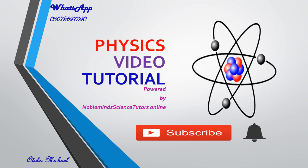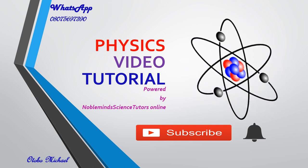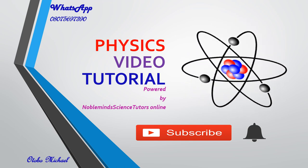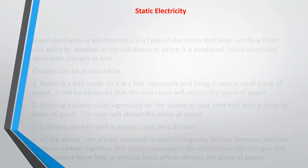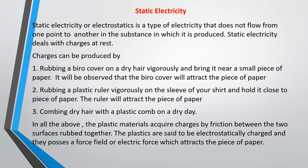So today we are looking at static electricity. When you say static, it means it is electricity that does not move. Something that does not move or something that is at rest is said to be static. So static electricity or electrostatic is a type of electricity that does not flow from one point to another in the substance in which it is produced.